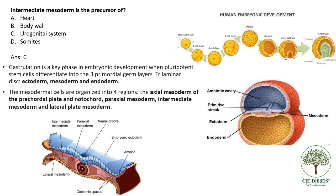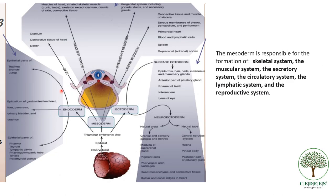The mesodermal cells arrange themselves into four regions. The central region is called the notochord. Then on either side of the notochord is the paraaxial mesoderm. Then on either side of the paraaxial mesoderm is the intermediate mesoderm, and on the most lateral aspect is the lateral mesoderm — notochord, paraaxial, intermediate, and lateral mesoderm.